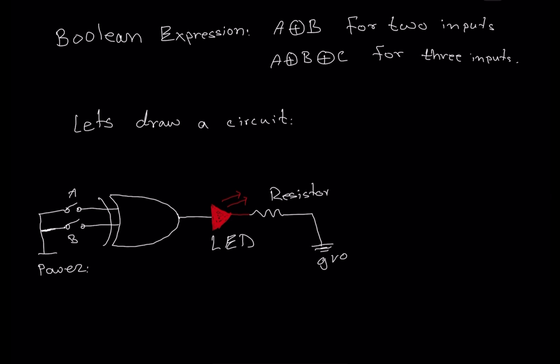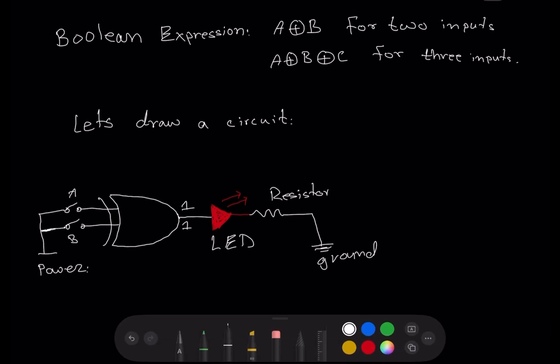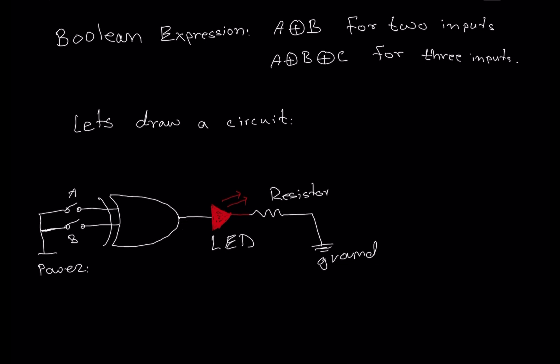So I'm naming everything here: LED light, resistor, switch A, and switch B. In this scenario, if switch A is on the LED light will be on; if switch B is on the LED light will be on. But in the XOR condition, if switch A and switch B are both on, the output will be low. If A and B are both closed, the output will be low. If A is open and B is open, the output will also be low or zero.